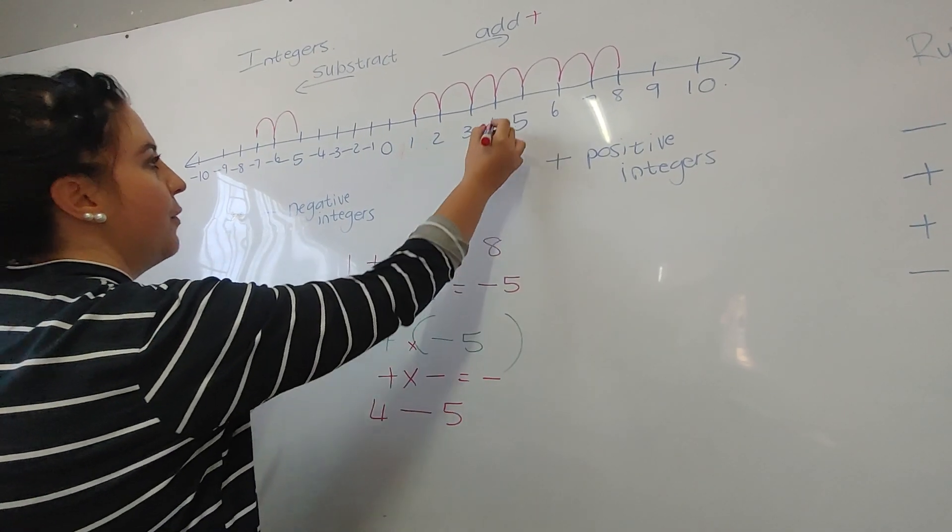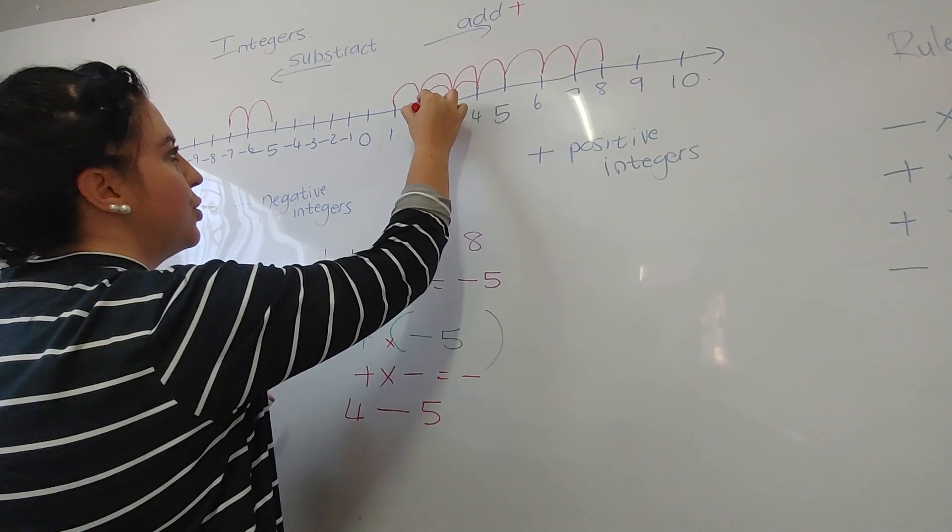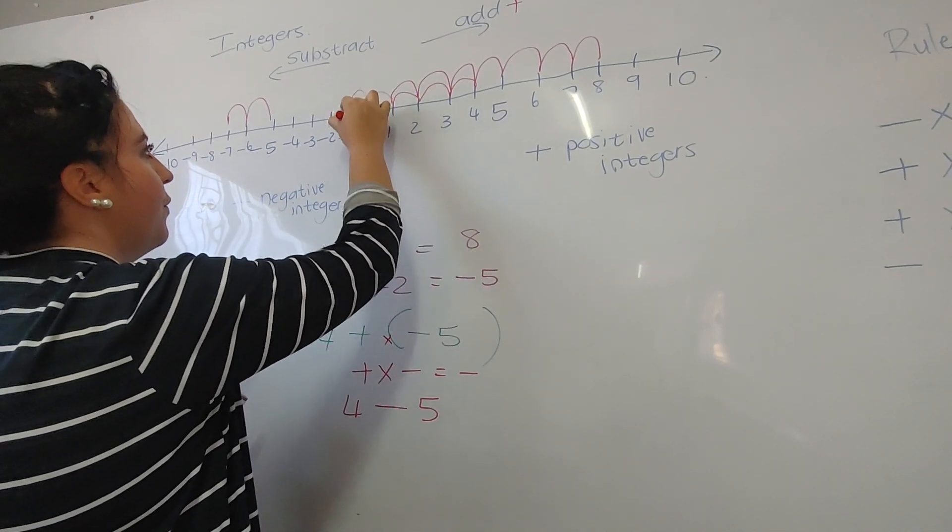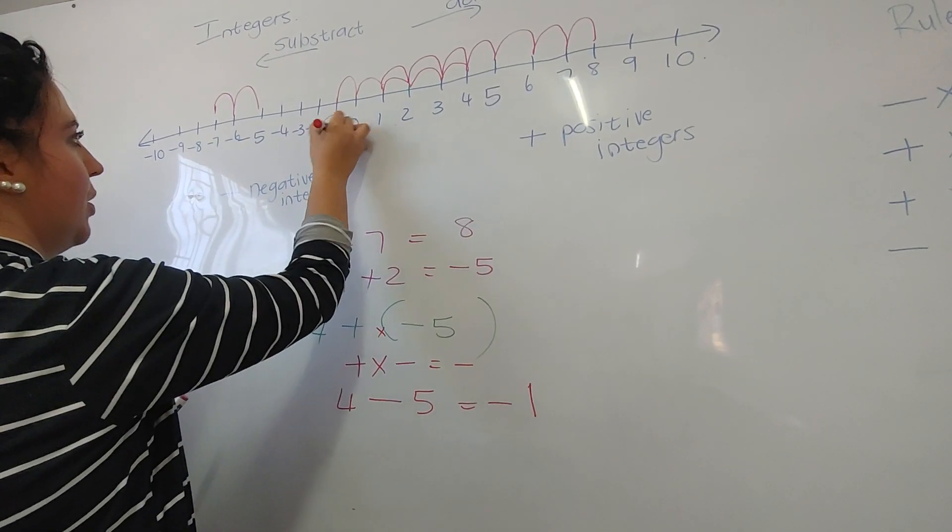So let's look at the number line. 4 - 5 is going to go 1, 2, 3, 4, 5. It's going to be -1, because we're on -1.